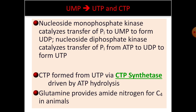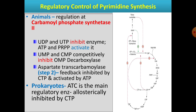UMP gives rise to UTP and CTP via nucleoside monophosphate kinases. Now that we have covered pyrimidine synthesis, we discuss its regulation. Like purine synthesis, pyrimidine synthesis must be tightly regulated — unchecked synthesis is a burden to the body, so control mechanisms exist at multiple levels.